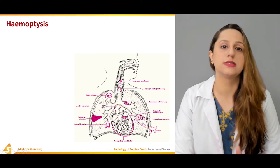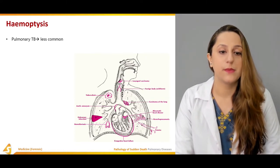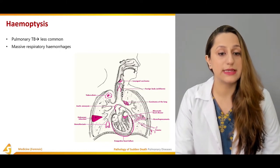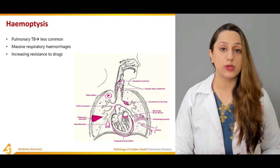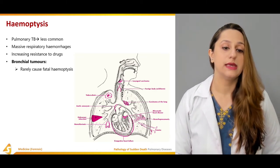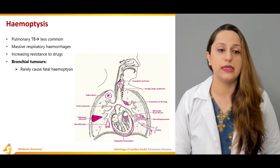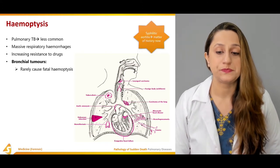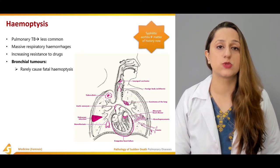Further causes include bronchiectasis, pulmonary infection, aortic aneurysms, and tuberculosis. Pulmonary TB is quite common. Massive respiratory hemorrhages with increasing resistance to drugs is one cause, and bronchial tumors can also be a cause, rarely leading to fatal haemoptysis.